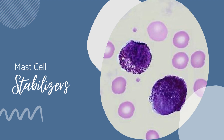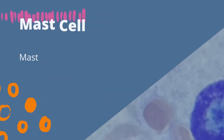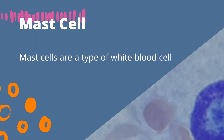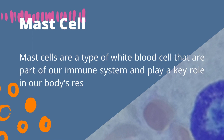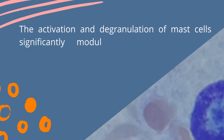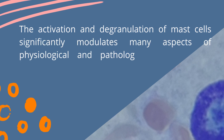Before proceeding to what mast cell stabilizers are, let us first tackle what mast cells are. Mast cells are a type of white blood cell that are part of our immune system and play a key role in our body's response to antigen. The activation and degranulation of mast cells significantly modulates many aspects of physiological and pathological conditions in various settings.